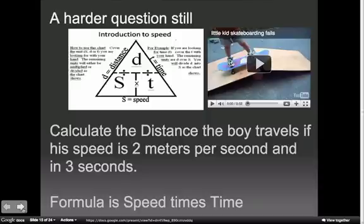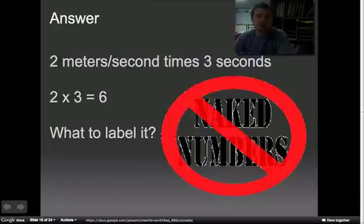So we've got to calculate the distance. His speed is 2 meters. Now imagine then covering up the distance because that's what we want to find. We're going to cover it up. So here we go, we got it covered. Good. So what's our formula? Well, our formula then is left with speed times time. Okay? Formula is speed times time. So here's how we do it. 2 meters per second times 3 seconds.